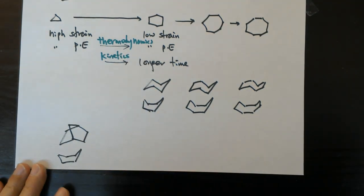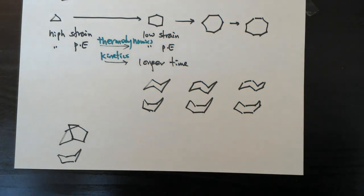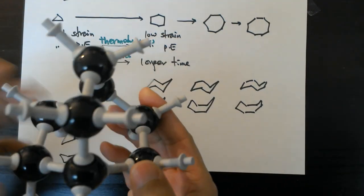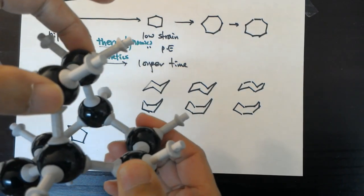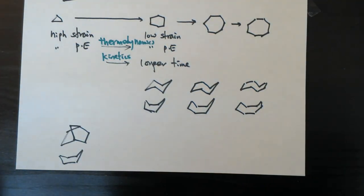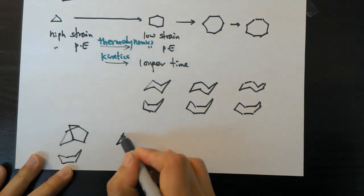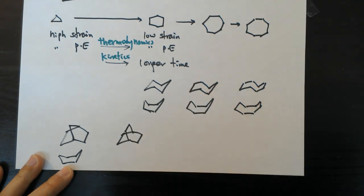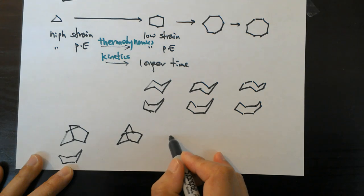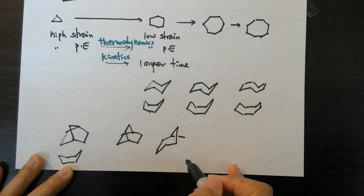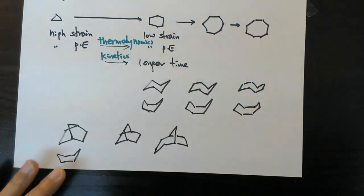That compound with an extra carbon bridging two positions is called a bicyclo compound. You can create another bicyclo compound from the boat with two carbons connecting the bridgehead. You can also use cycloheptane to make this kind of bicyclo compound.